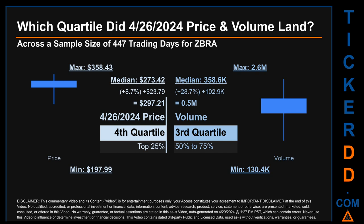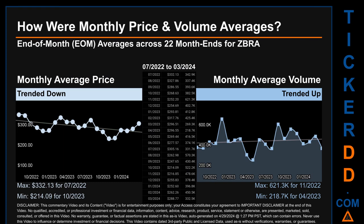Hello, my name is Claire. How were price and volume averages for ZBRA across 447 trading days? There were a total of 22 month-ends, for which monthly averages for daily price and volume were calculated. Overall, monthly price average trended down while monthly volume average trended up. The maximum end-of-month average price was $332.13 for July 2022, while the minimum was $214.09 for October 2023. For volume, November 2022 and April 2023 respectively saw the highest and lowest monthly average volume at 621,300 and 218,700.